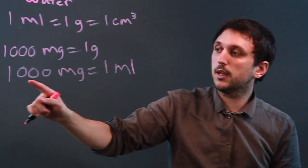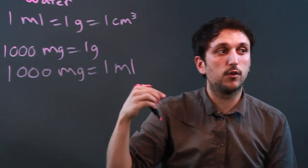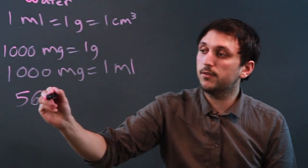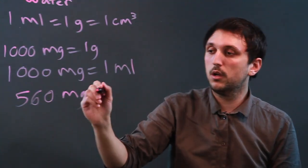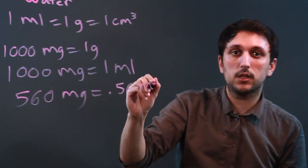Now, based on this, we can do other conversions. If we said we had 560 milligrams of water, well, that would be .56 milliliters.